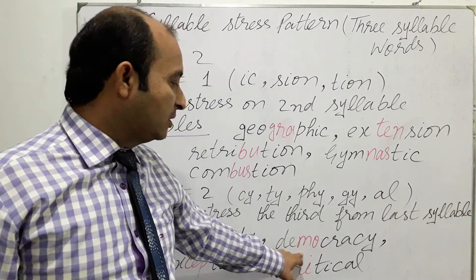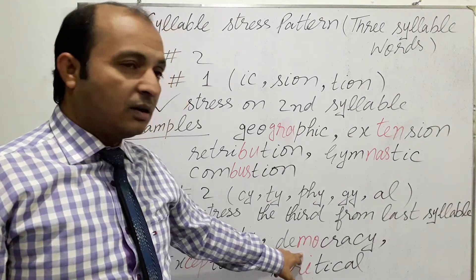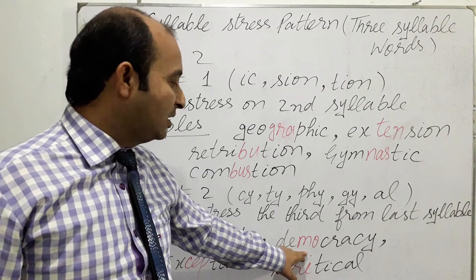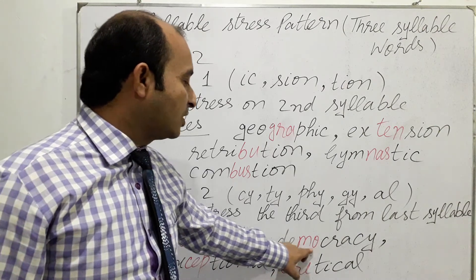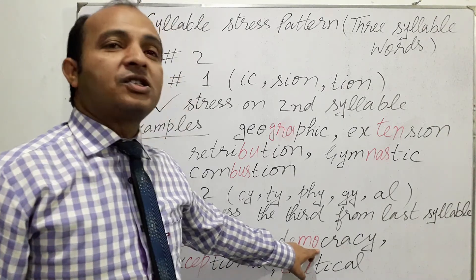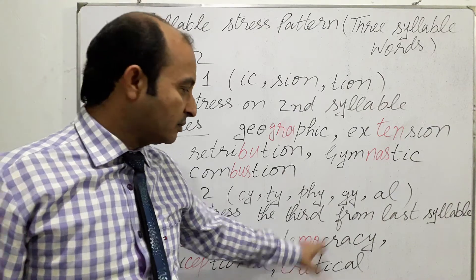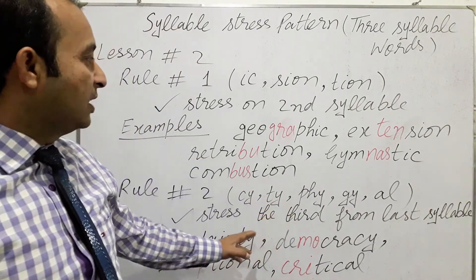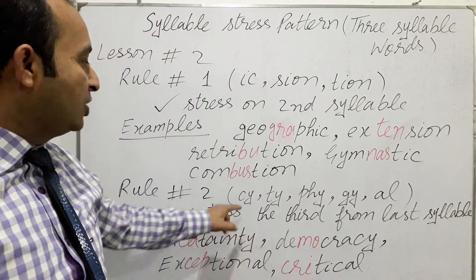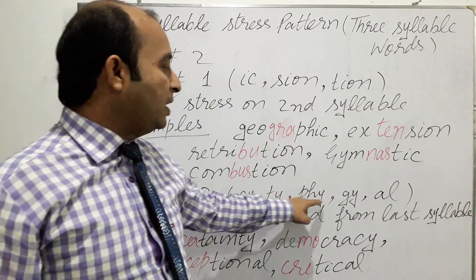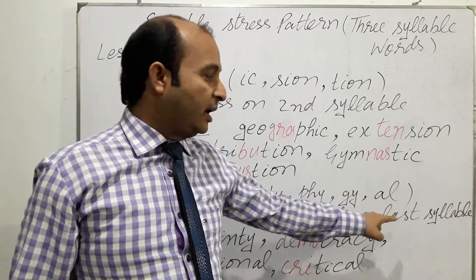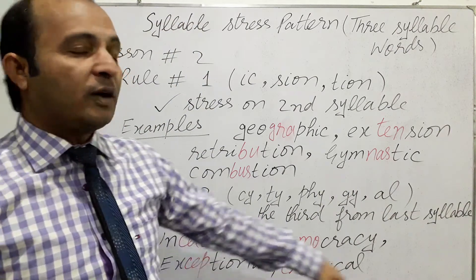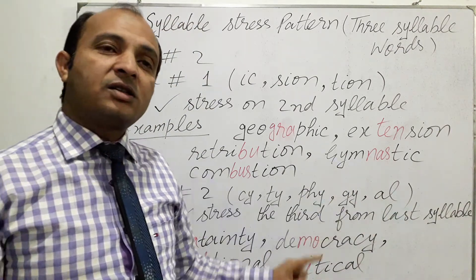Similarly, we have another word: 'democracy'. Not 'DEmocracy' — it is 'deMOCracy'. We are stressing on the third last syllable in this word. When we have words that end with -cy, -ty, -phy, -gy, and -al, we stress the third from the last syllable.